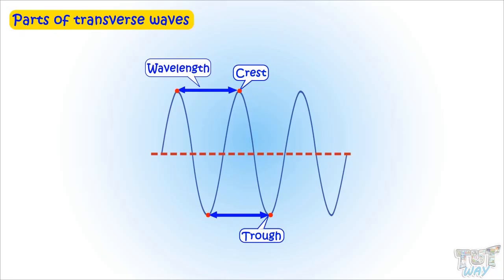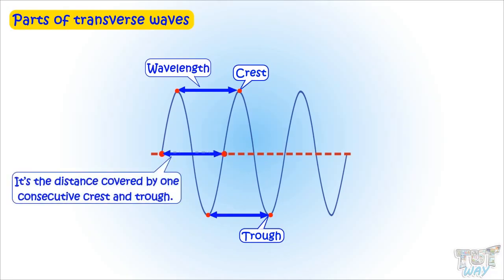Wavelength is the distance covered by one consecutive crest and trough.